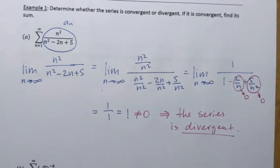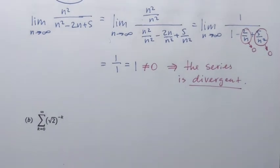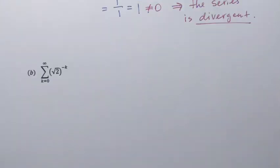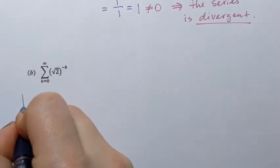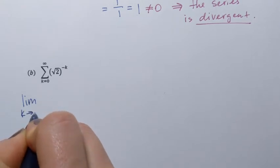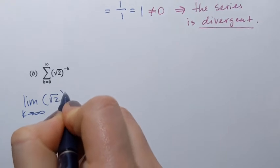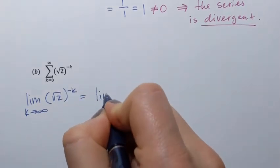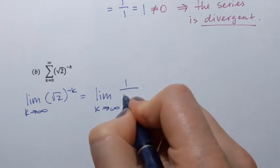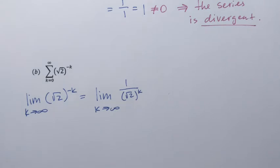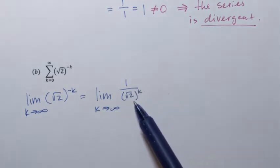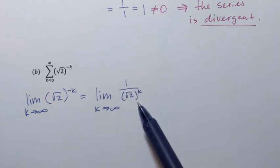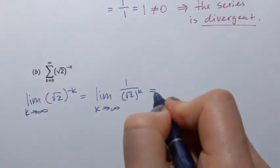That's the answer for the first example. Let's try it with the second example. The second example is the series in which we have square root of 2 to the power negative k. To apply the divergence test we need to set up the limit as k goes to infinity of square root of 2 to the power negative k. To find this limit, I'll switch from the negative power to the positive: 1 over square root of 2 to the power k. As k approaches infinity the denominator grows, approaching infinity.